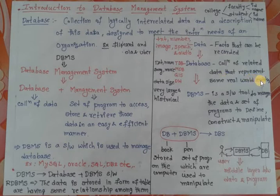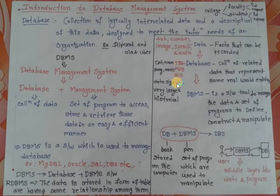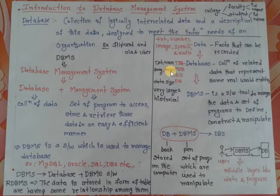The second term is database. A database is a collection of related data that represents some real-world entities — entities are objects. Types of databases include: traditional database, multimedia database, geographical information system, and data warehouse. In a traditional database, the data consists of text and numbers.